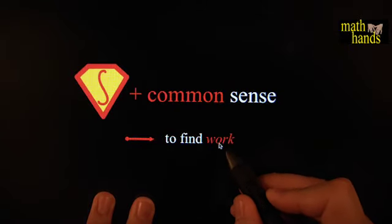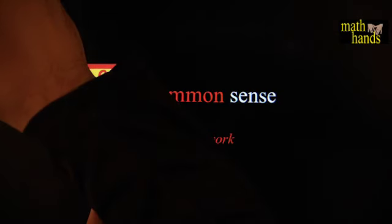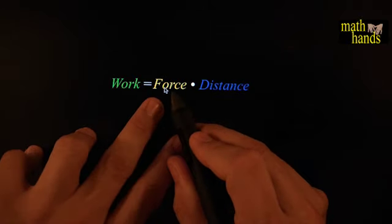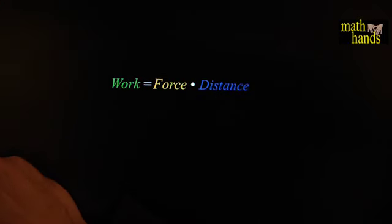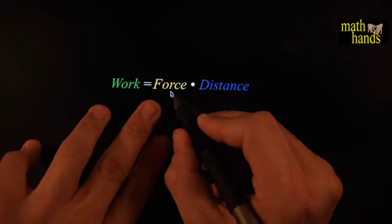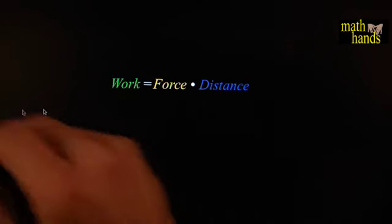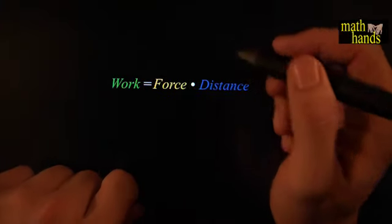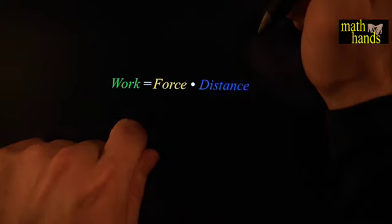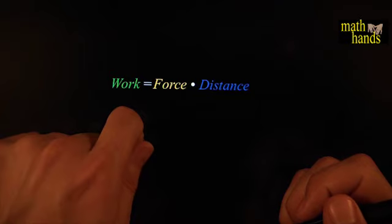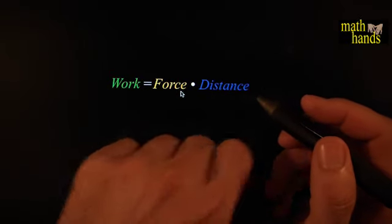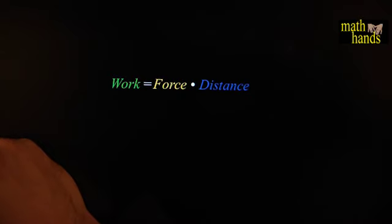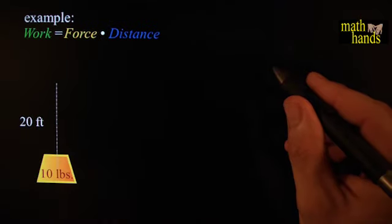And today we add work. Not work like Monday morning work, but work like physics work, the kind of work that's defined by force times distance. Notice it looks a lot like torque, but it's a different kind of force times a different kind of distance. You're not applying force at a certain distance away from a pivoting point, rather you're taking a force and applying it a certain amount of distance to a moving object, and thus creating work.